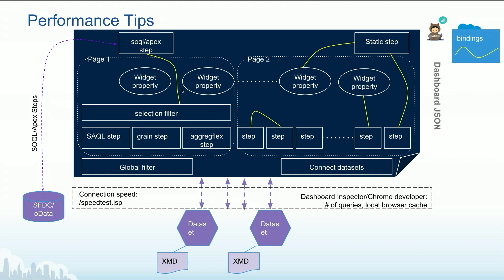You have a lot of bindings happening. Result bindings are costly, keep that in mind. There's the regular faceting, selection filters, and global filters — which are good because they execute before anything against the data sets. We also have connected data sets, linking the data sets at the designer layer.